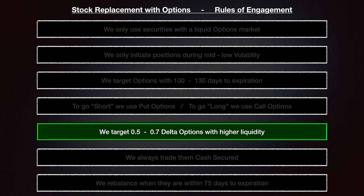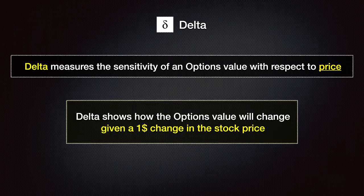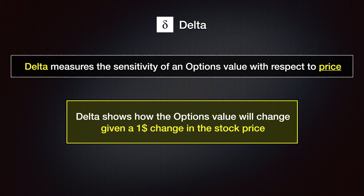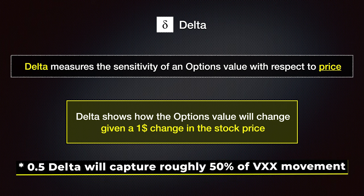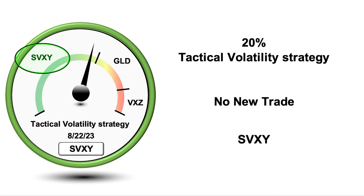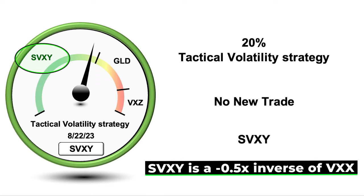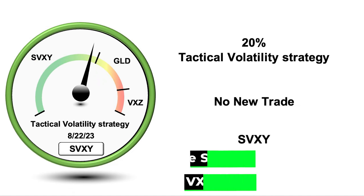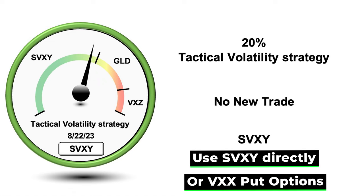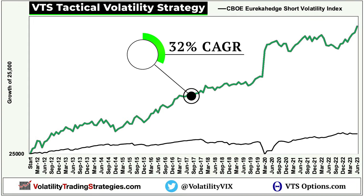Rule five is that we target between 0.5 and 0.7 delta options. Delta refers to how much an option value changes with respect to changes in the underlying security. So if we're doing 0.5 to 0.7 delta VXX options, we can expect we're capturing a little over half of the movement in the VXX itself. We're using the SVXY as our ETF of choice in the tactical volatility strategy. SVXY is already a minus 0.5 times inverse volatility ETF, so it's very similar to these 0.5 to 0.7 delta options. VTS members can either use the SVXY itself or this stock replacement method — both are about half the movement to the VXX, which from a risk-reward perspective is exactly what we want.